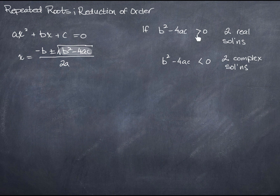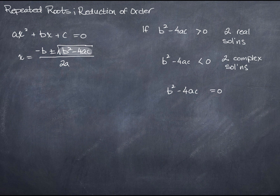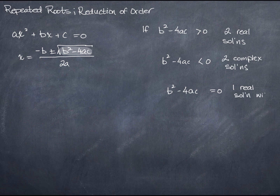So far we've talked about what happens when the discriminant is greater than zero and when it's less than zero. But what about when it's equal to zero? That's the only option left. If the thing inside the square root is zero, taking its square root gives zero. So you'll have negative b plus zero and negative b minus zero over 2a — that's still two solutions, but it's the same number. We call this one real solution with multiplicity two.